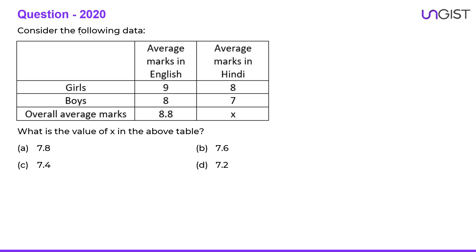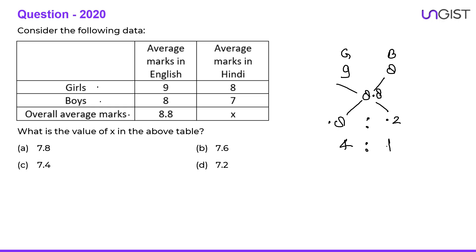The next question says: consider the following data. Average marks in English for girls and boys and the overall average marks are given. The weights are 0.8 and 0.2, so the ratio of girls to boys is 4 to 1. Just assume that in the class we have four girls and one boy.